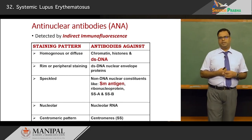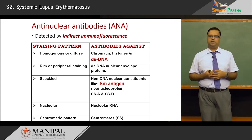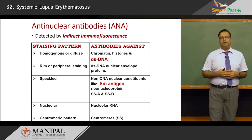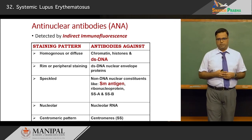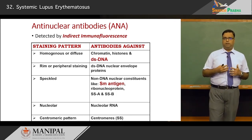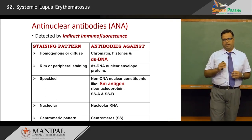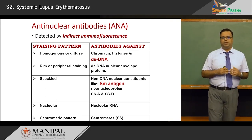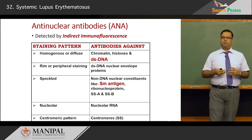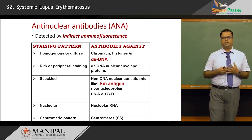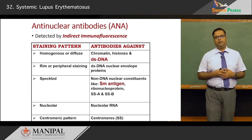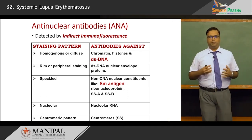To summarize: a homogeneous pattern is typical for double-stranded DNA; rim or peripheral staining relates to an envelope protein; speckled pattern corresponds to SM antigen, again specific for SLE; nucleolar and centromeric patterns make up the rest. These five patterns are demonstrated using indirect immunofluorescence.